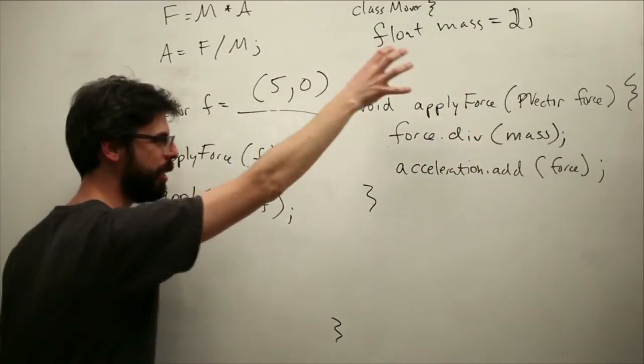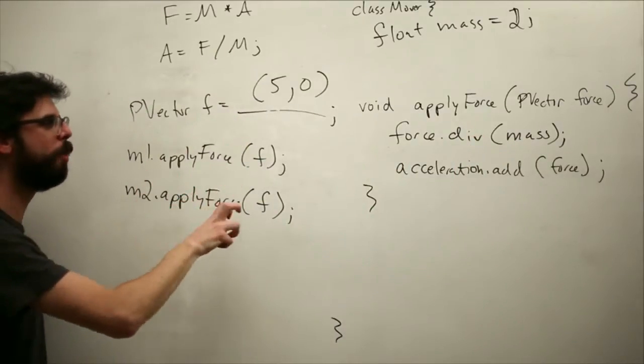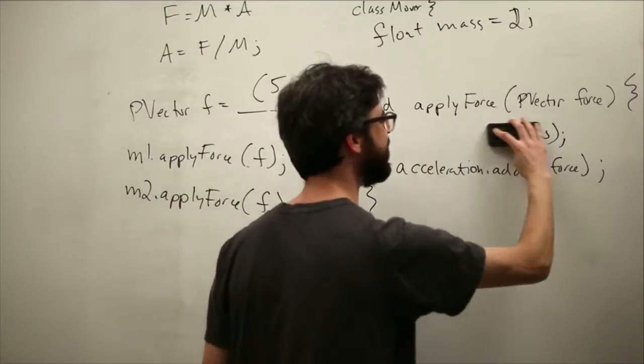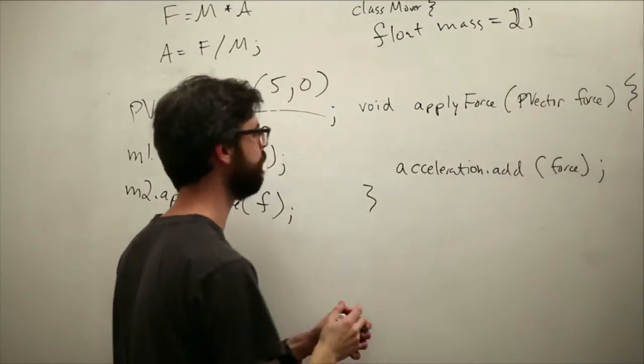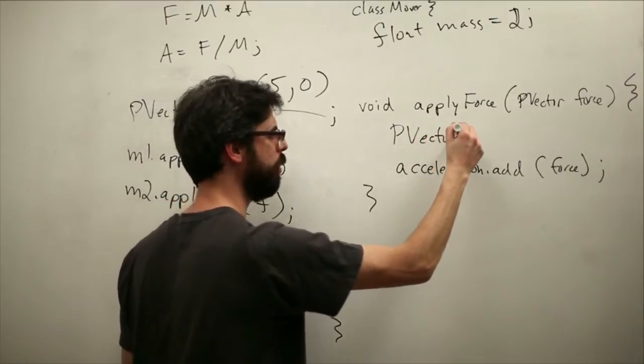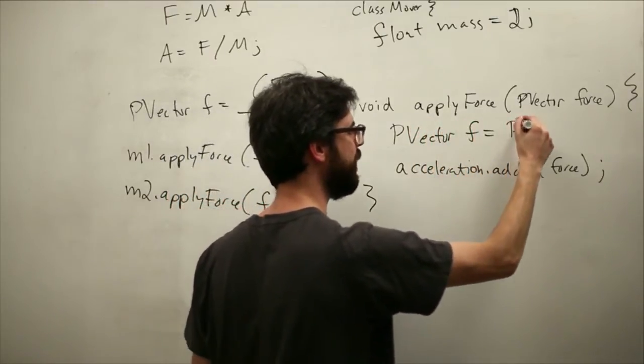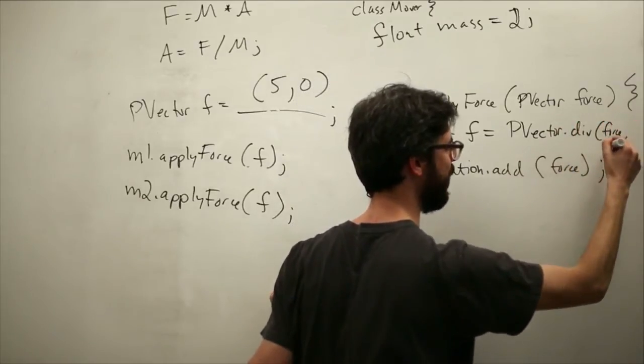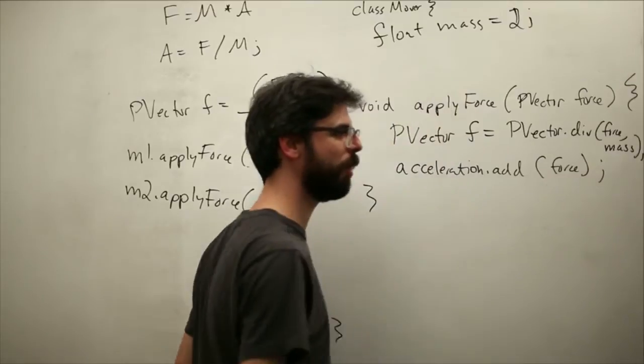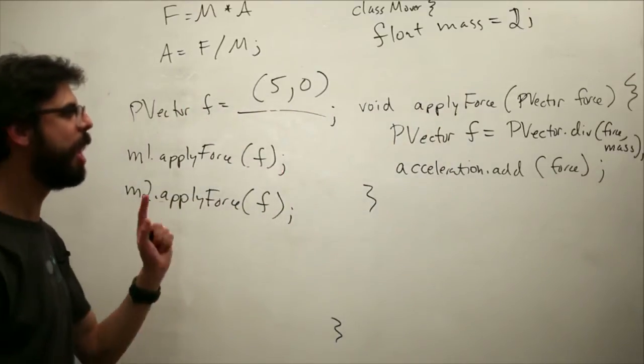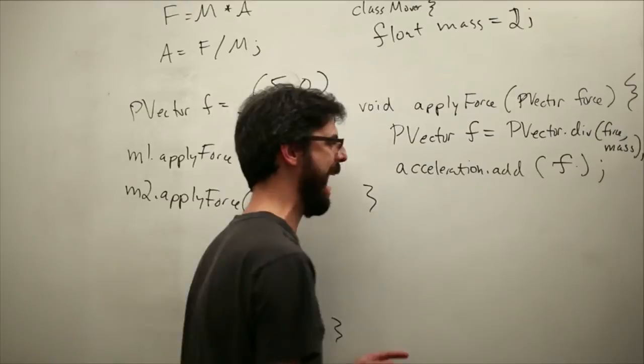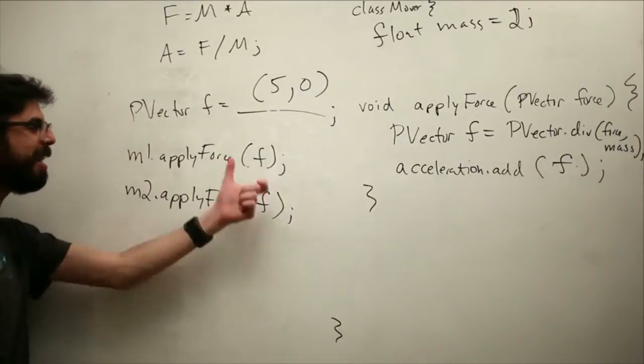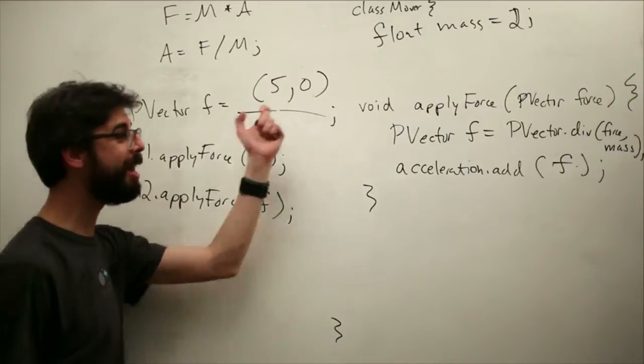But for now, what we want to do is when we pass it into the object, we don't want to actually, when we pass it into this function, we don't want to divide it directly. We want to ensure that we make a copy of it. And the way that we're going to solve that is by using this static version of the divide function. P-vector, I'll make a new variable called f equals p-vector dot divide force, divided by mass. Kind of ran out of room here. I hope you can see that. We're going to type it out in a moment.